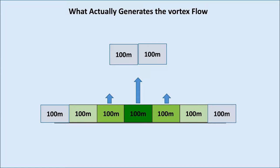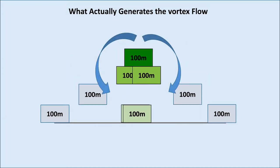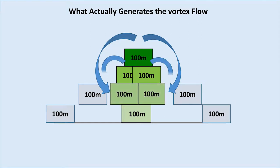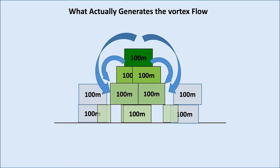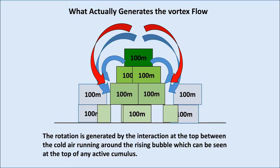What actually generates the vortex flow? Well, we've seen this example of how the vortex forms. The sinking air — the air that is above the vortex as it climbs up — descends around the outside, and that keeps the acceleration of the downward flow of the vortex going. The rotation is generated by the interaction at the top between the cold air running around the rising bubble, which can be seen at the top of any active cumulus.